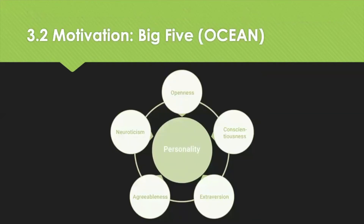The Big Five personality traits, also known as the Five Factor Model, means understanding personality traits. The mnemonic OCEAN can be remembered for the traits: Openness to experience, Conscientiousness, Extroversion, Agreeableness, and Neuroticism.